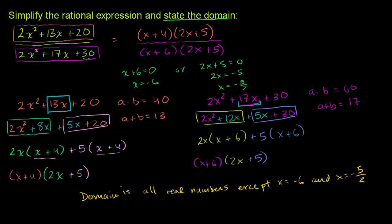And the reason why we have to exclude those is those would make this denominator, either way you write it, it's going to make the denominator equal to 0, and it would make the entire rational expression undefined. So we've stated the domain.